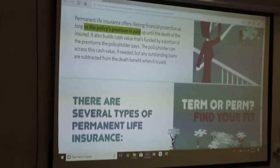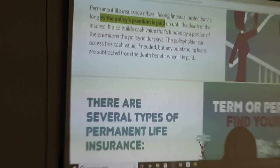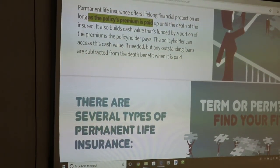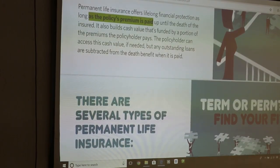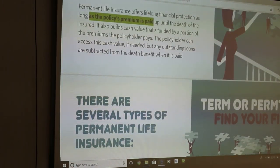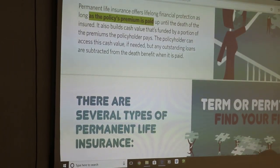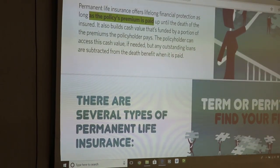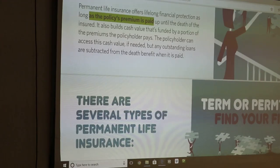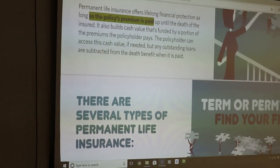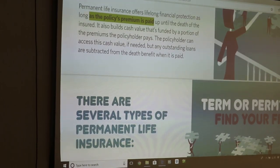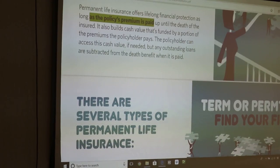Permanent insurance coverage offers lifelong financial protection as long as the policy's premium is paid up to the death of the insured. It also builds cash value that's funded by a portion of premiums. The policy holder can access this cash value if needed. But any outstanding loans are subtracted from the death benefit when it is paid.